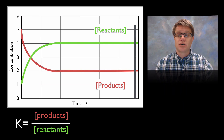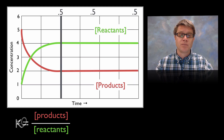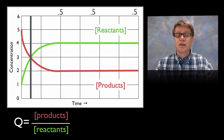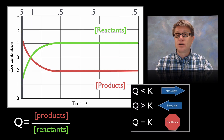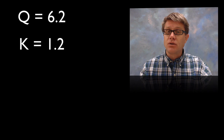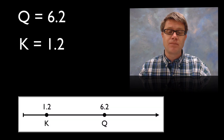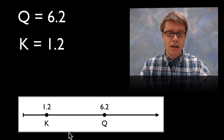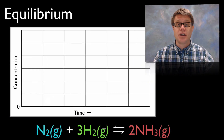Looking at a reaction moving in the opposite direction, the K values are exactly the same. But if reactants and products are equal, Q = 1, and further along Q = 5, which is greater than K. So now the reaction moves to the left — from products to more reactants. If you're given Q and K values, you should immediately be able to figure out which direction the reaction goes. If it helps, put them on a number line: K is where you want to go, Q is where you are, and you move toward K.